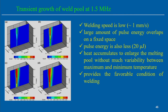The transient growth of the weld pool in the welding process can also be observed. At 1.5 MHz, with very low welding speed of 1 mm/s, there is a large amount of pulse accumulation and pulse energy overlap over a fixed space. Pulse energy is only 20 microjoules, but heat accumulates to enlarge the melting pool with less variability between maximum and minimum temperatures — providing favorable conditions for welding. The gradual development of the molten zone shown in cases a, b, c, d illustrates the transient growth of the weld pool at this particular pulse frequency.